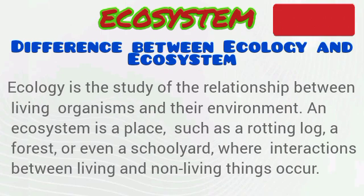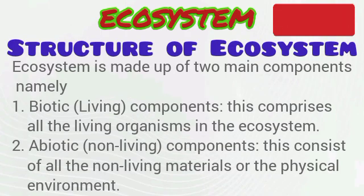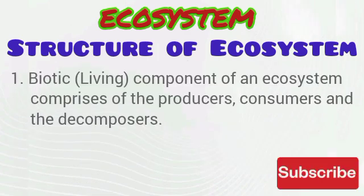Let's talk about the structure of an ecosystem. An ecosystem is made up of two main components: the biotic or living components, and the abiotic or non-living components. The biotic component comprises all living organisms in the ecosystem, such as plants, animals, and microorganisms. The abiotic component comprises all non-living materials or the physical environment, such as the air, the water, and the soil.